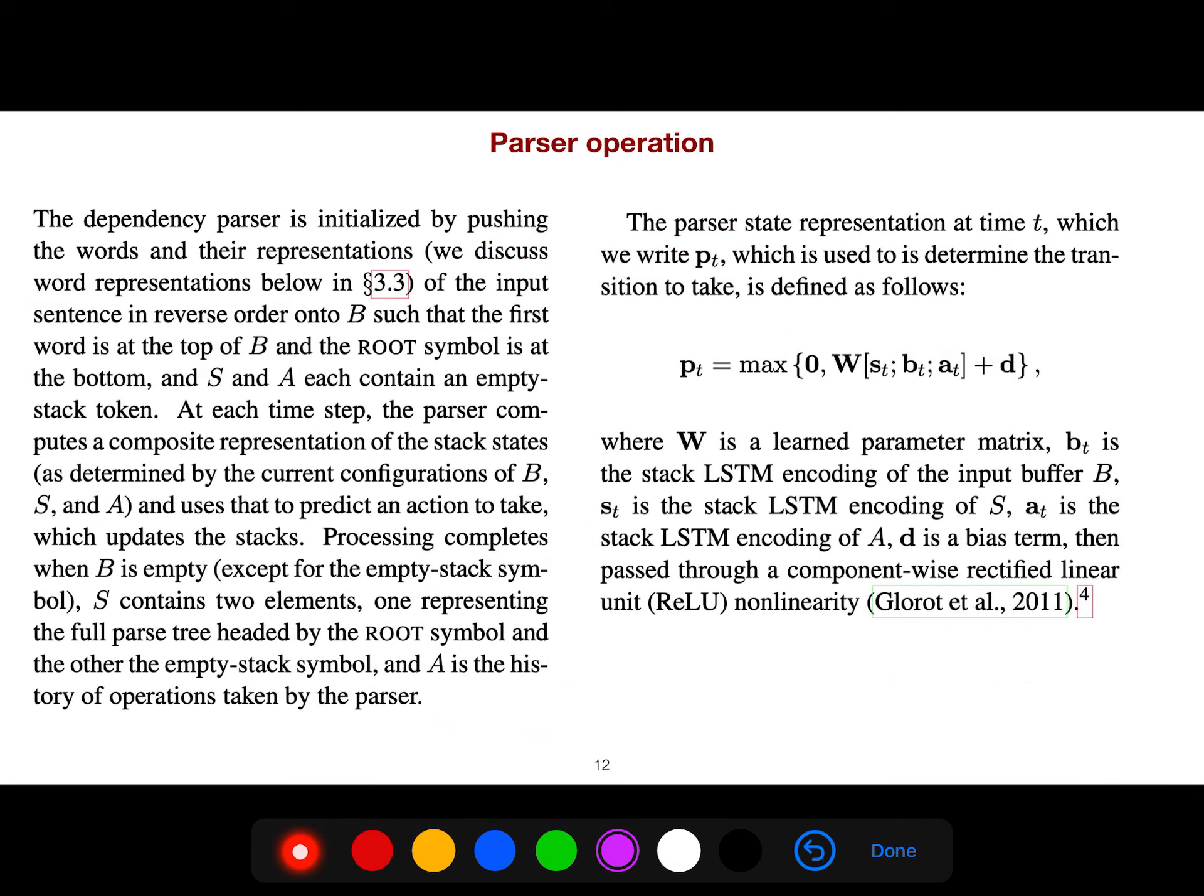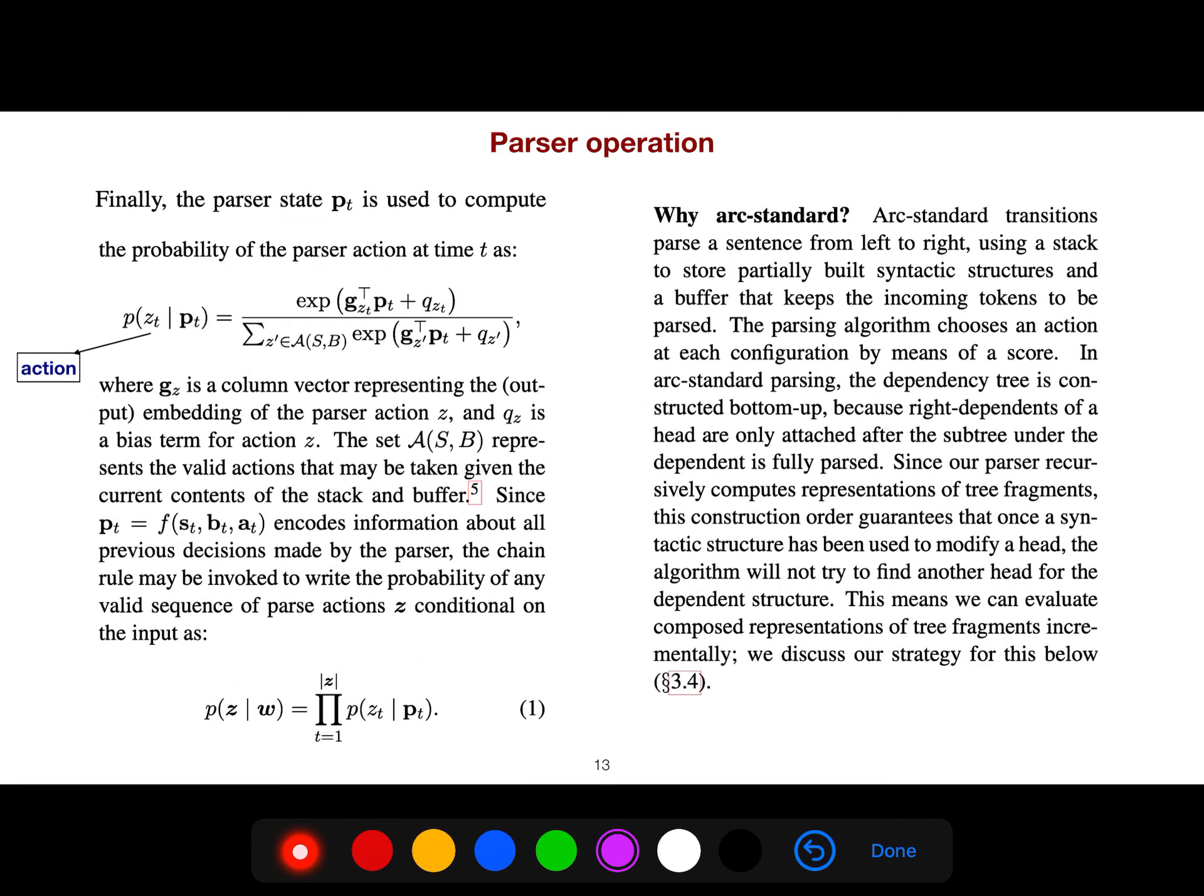If you concatenate the thing for the stack and the buffer and the action history, and then take a kind of activation, you get the state of your parser. Because you know the state of the parser, you can just use a linear combination over that and take the softmax, and you get the probability of each action. For example, what is the probability of shift, what is the probability of reduce right or reduce left? And finally, because these actions are independent, you can multiply them.